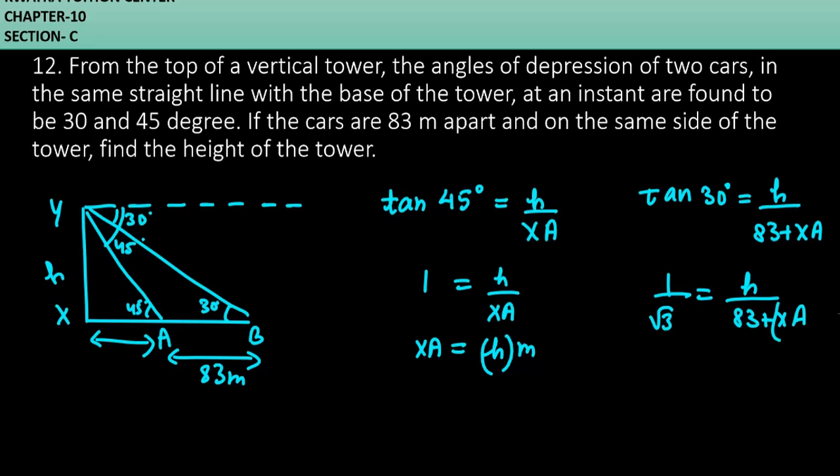Let's substitute xa. It will be 1 by root 3 equals h over 83 plus h. Taking 83 plus h to the left side and root 3 to the other side, now you can find h. Take h to the right side: 83 equals root 3 h minus h. You can take h common from the right side and you will get root 3 minus 1.